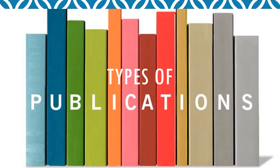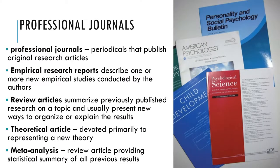Types of publications. Professional journals are periodicals that publish original research. There are thousands of professional journals that publish research in psychology and related fields. They're usually published monthly or quarterly in individual issues, each of which contains several articles. The issues are organized into volumes, which usually consist of all the issues for a calendar year. Some journals are published in hardcopy only, others in both hardcopy and electronic form, and still others in electronic form only. Most articles in professional journals are one of two basic types: empirical research reports and review articles.